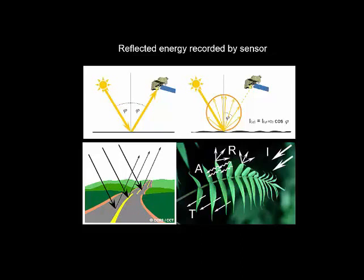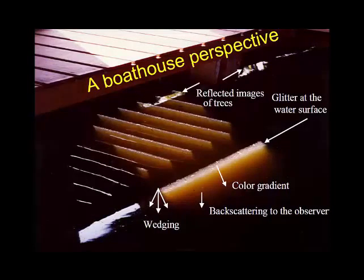This slide provides an analogy of what's happening in the atmosphere and as radiation is reflected back off the Earth's surface. You can see a whole range of different processes: there's shadow on the deck as well as full sunlight, reflected images on the water's surface, a gradient of colour transmitted through the water reaching back at the sensor — in this case a camera — and also backscatter back towards the observer.